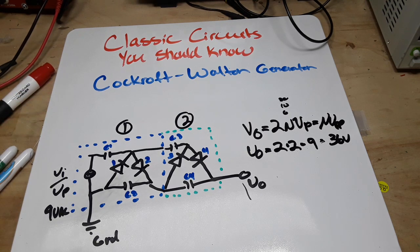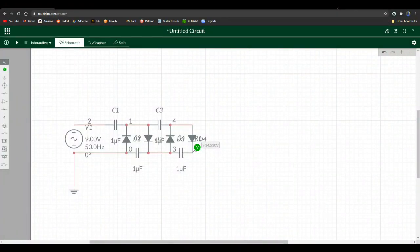Let's go simulate it. Alright, I'm using Multisim here from National Instruments. It is a free simulator. You can see we have our AC source right here, nine volts 50 Hertz, then we have our capacitors one, two, three, and four, and our diodes one, two, three, and four. And we'll fire it up and there you can see our voltage climbing to 34.3 volts.